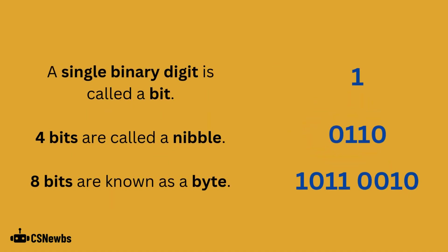A single binary digit is called a bit. Four bits are called a nibble, and eight bits are known as a byte.